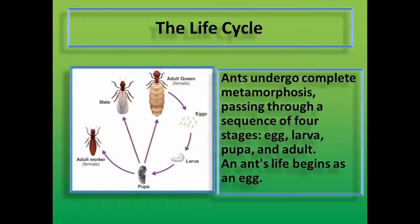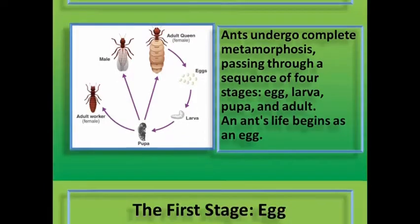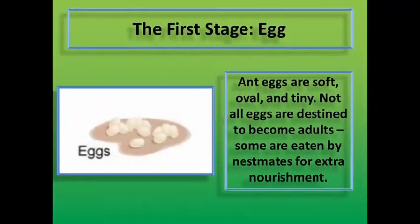An ant's life begins as an egg. The first stage: egg. Eggs are soft, oval, and tiny. Not all eggs are destined to become adults — some are eaten by nest mates for extra nourishment.